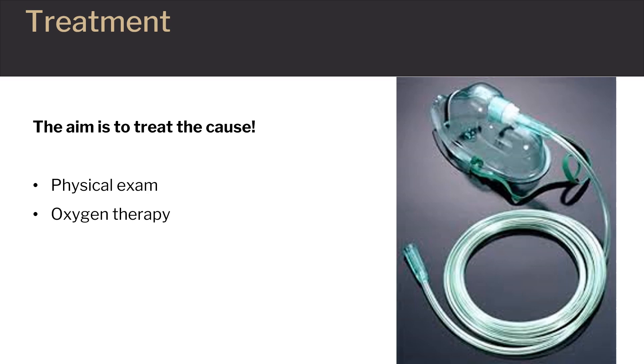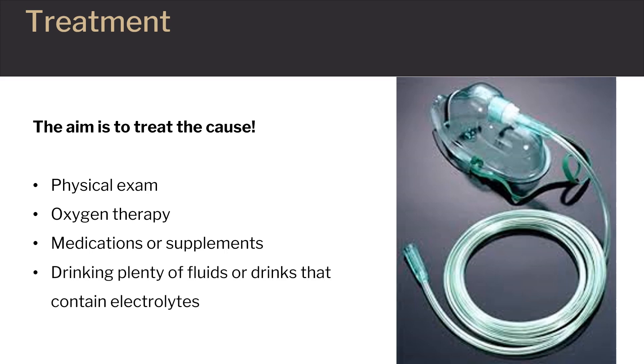If alkalosis is caused by a loss of chemicals, such as chloride or potassium, the patient will be prescribed medications or supplements to replace those chemicals. Some cases of alkalosis result from an electrolyte imbalance, which may be corrected by drinking plenty of fluids or drinks that contain electrolytes. If the person has an advanced case of electrolyte imbalance, it will need to be treated in the hospital. Most people recover from alkalosis once they receive treatment.